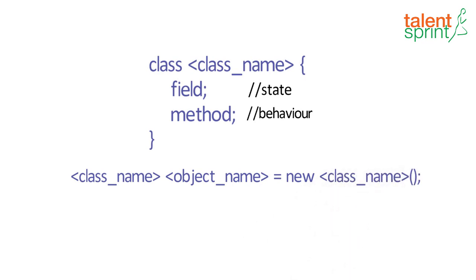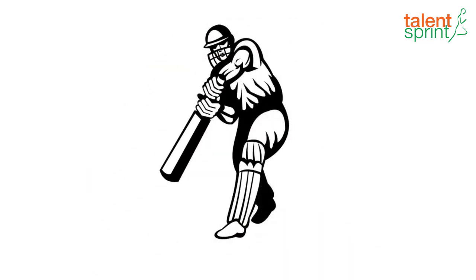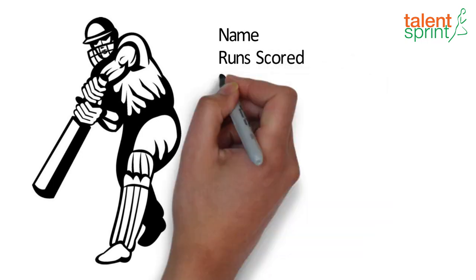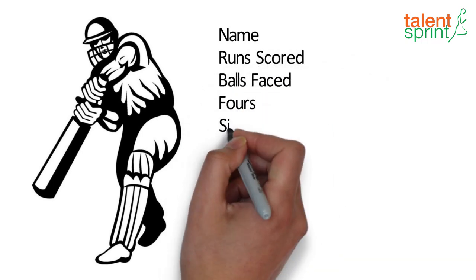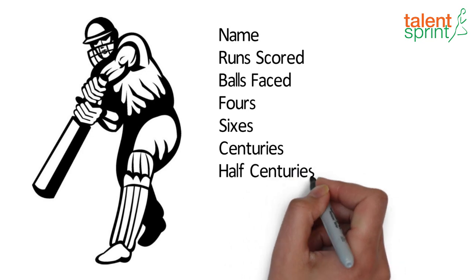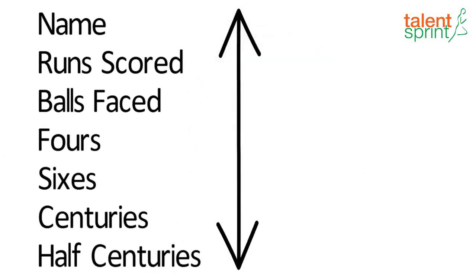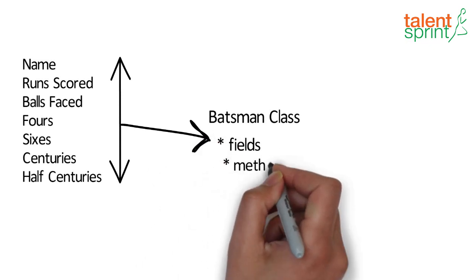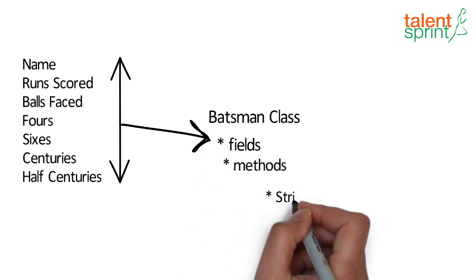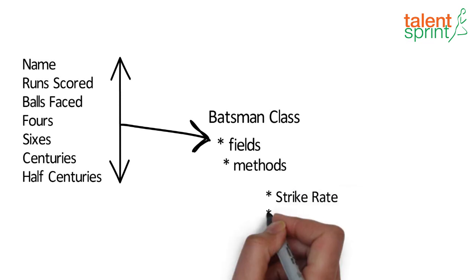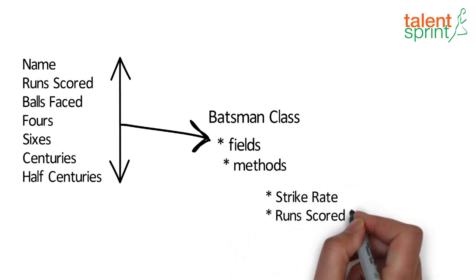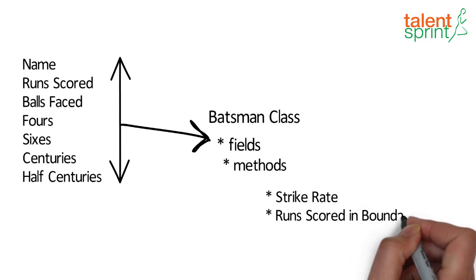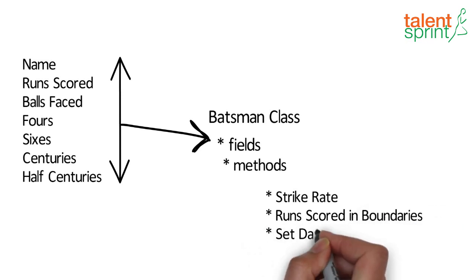If you think of a batsman, every batsman would have common details like name, runs scored, fours, sixes, centuries, and half centuries — so all these properties of the batsman become the fields of the batsman class. For the methods, every batsman has a strike rate, so we can have one method to calculate the strike rate, another method to get runs scored and boundaries, and of course a method to set all values of the class fields — let's call it set data.